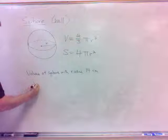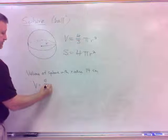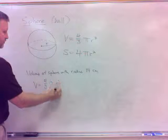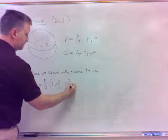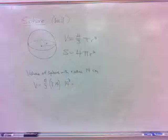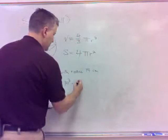Well, the volume is four-thirds pi r cubed, so it would be four-thirds times 3.14 times the radius cubed, 14 cubed. Plug it all in there, I get 11,488.